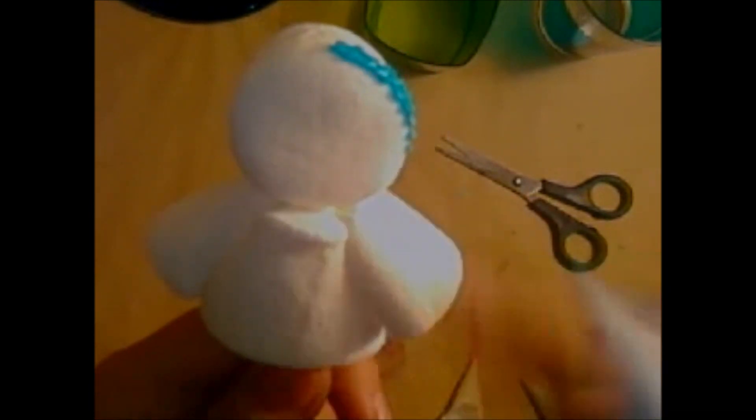Now we're going to take the glaze of one of the colors. In my case I'm going to take the yellow and we're going to do the hair. We're going to make it like curls, we're going to make it like a zigzag so that we simulate the curls or the crimps of the hair.